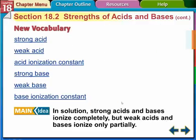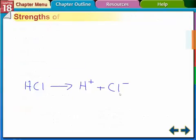So we're going to go over all of this vocabulary here, and the main idea is in solution, strong acids and bases ionize completely. That's what makes them strong acids and bases. But weak acids only ionize partially. So we're going to explain what that means.